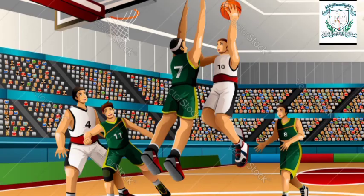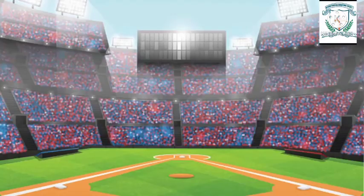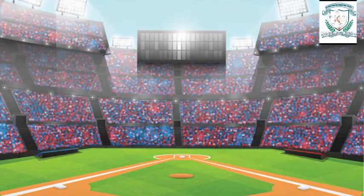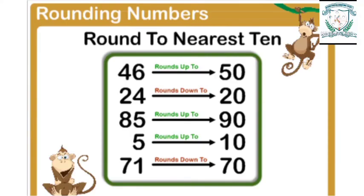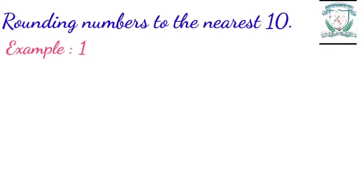For example, when we are talking about a crowd of people watching a sports event in a stadium, we may say about six thousand people came for the event. The actual number could be a few more or less than six thousand. Let us understand the process of rounding numbers to the nearest ten.